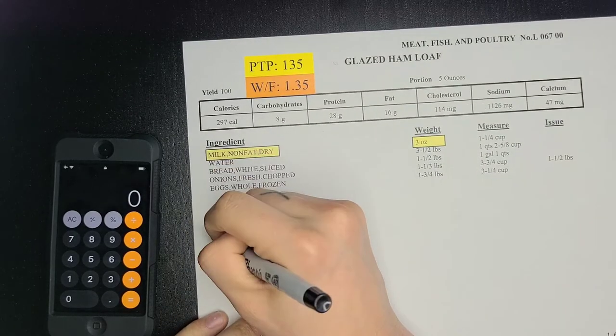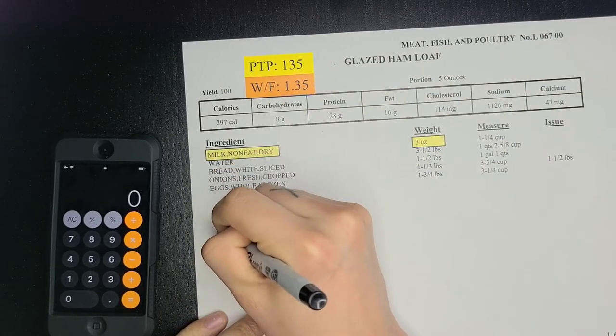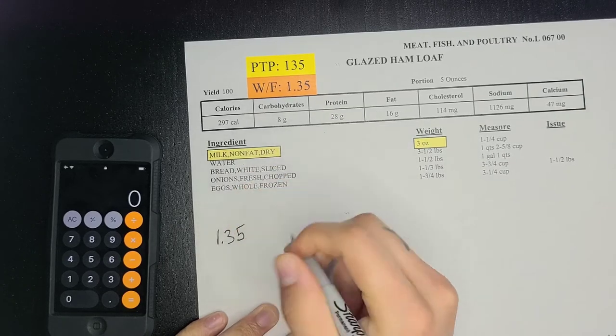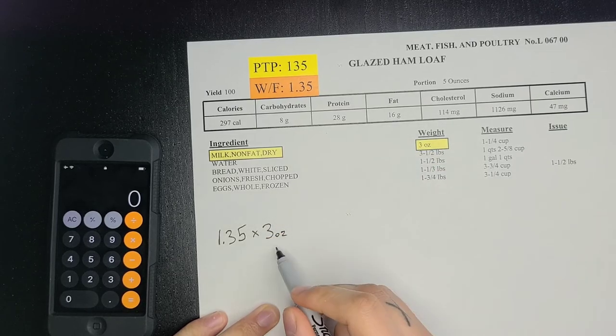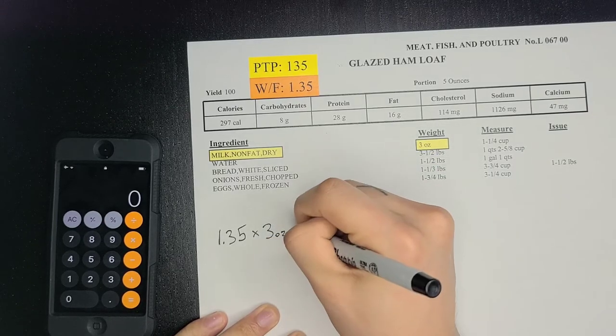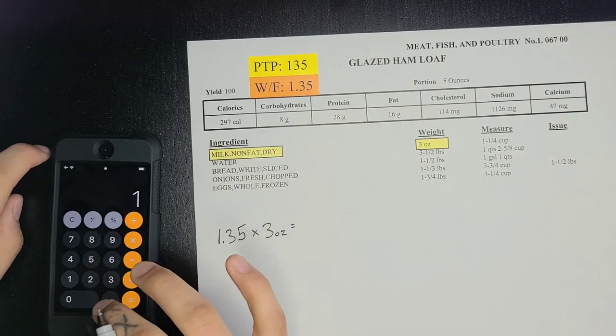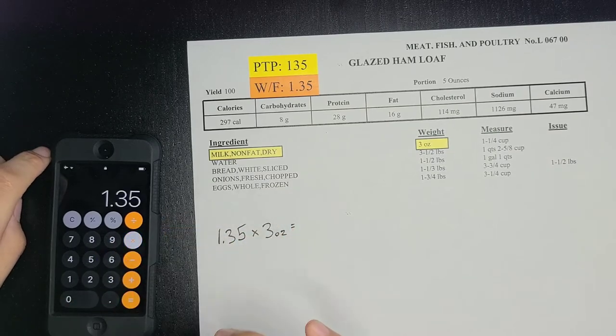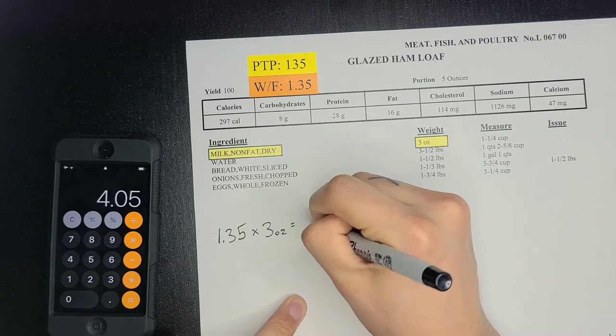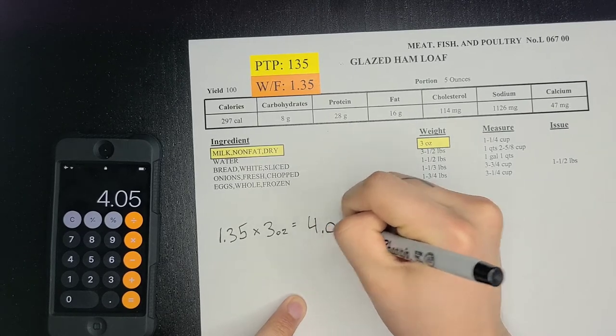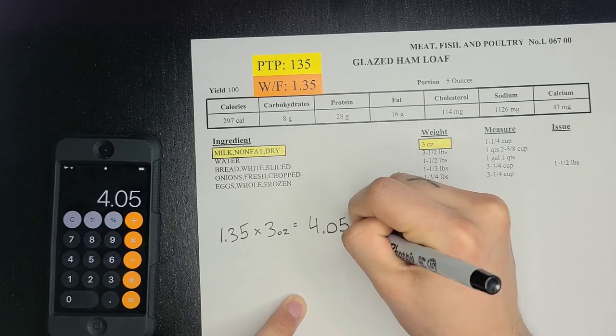So this is 1.35 times 3 ounces. Don't forget to label all your stuff. So 1.35 times 3 equals 4.05 ounces.